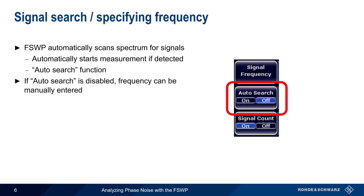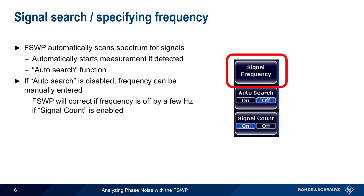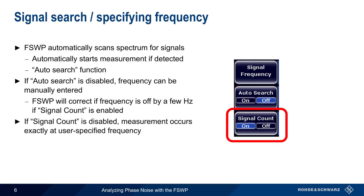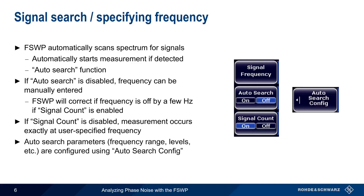If auto-search is disabled, the frequency can be manually entered using Signal Frequency. Even if the frequency is manually entered, the FSWP will correct small frequency errors as long as Signal Count is enabled. Disabling Signal Count causes the FSWP to measure at exactly the user-specified signal frequency. The parameters used in auto-search, such as the frequency range to check and the required levels, can be configured using Auto-Search Config. This function also allows you to define a capture range for tracking a drifting signal.